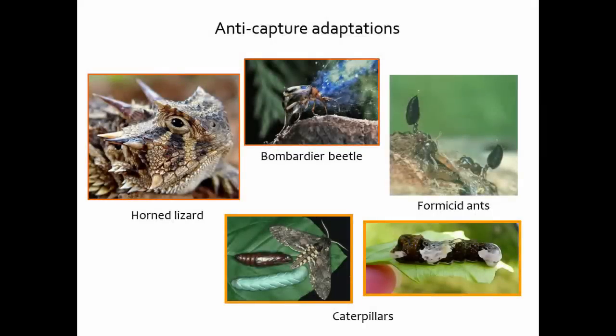Many prey species have anti-capture adaptations. One video shows a horned lizard with long, pointy horns that keep predators from capturing it, and it also has the ability to squirt blood from its eyes. Bombardier beetles have great anti-capture adaptations — they mix two precursor chemicals that come out as a boiling hot spray, which is very effective as shown in the video. Several ant species in the family Formicidae have formic acid they can release through stingers. Fire ants are members of Formicidae, so if you've been stung by one, you know what formic acid feels like — a very effective anti-capture adaptation.